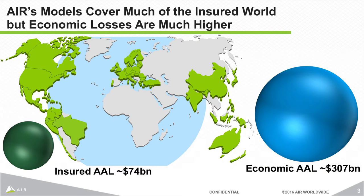To get everybody on the same page and introduce the concept of the protection gap, this circle of 74 billion is the insurance average annual loss from running all our models on an insured basis. On the right-hand side is a much bigger circle — an economic average annual loss of around 300 billion US dollars. That is a combination of all various losses that could happen in the world, from insured and uninsured property, and losses seen by individuals and governments around the world.